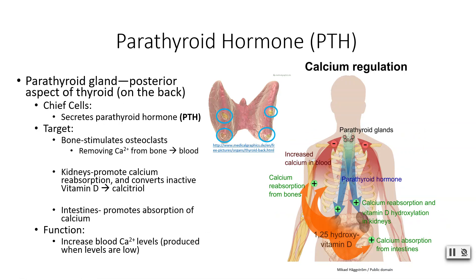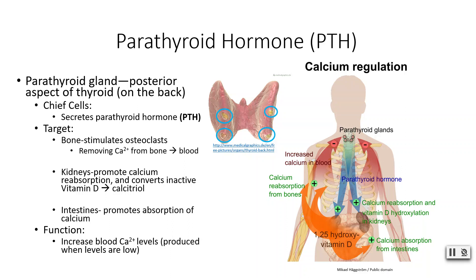On the backside of the thyroid gland are your parathyroid glands, which often don't appear on anatomical models. There are four small islands of parathyroid cells composed of chief cells, which secrete parathyroid hormone (PTH). The primary target of PTH is bone — specifically osteoclasts — which are stimulated to perform bone resorption when blood calcium levels are too low, releasing stored calcium into the blood.